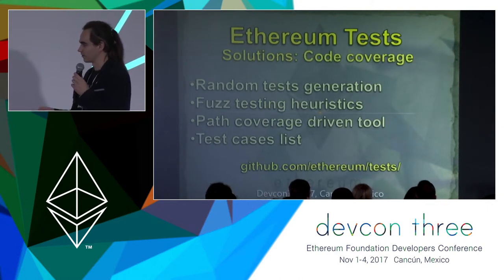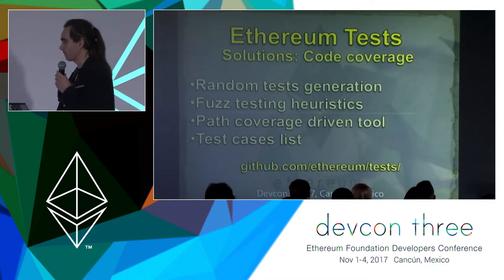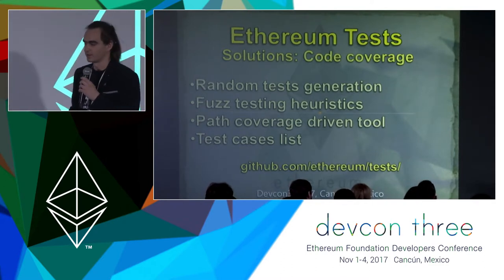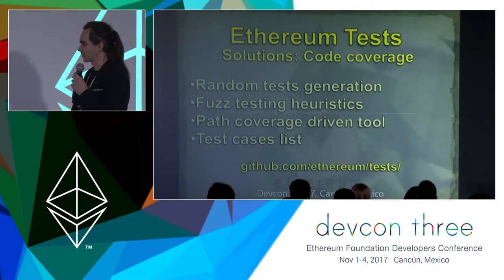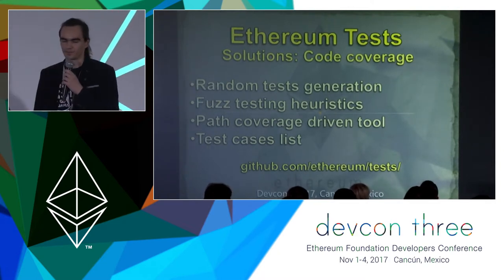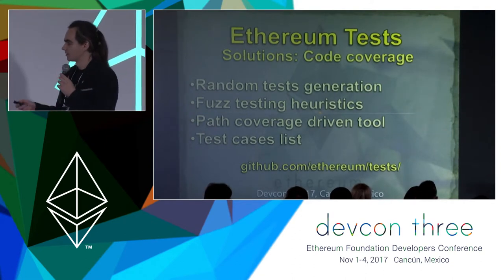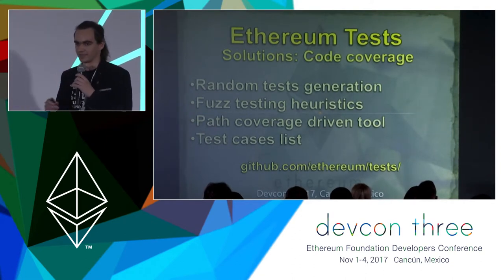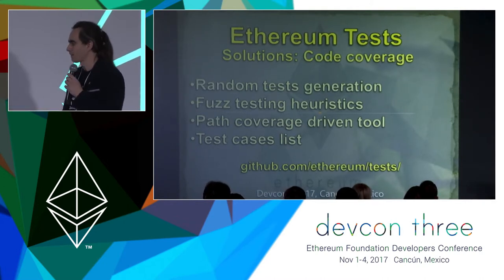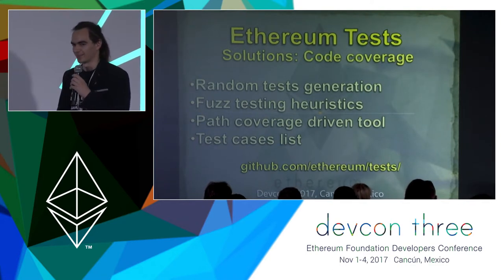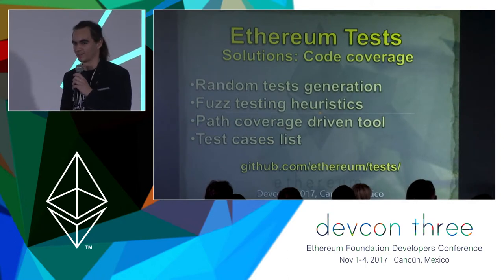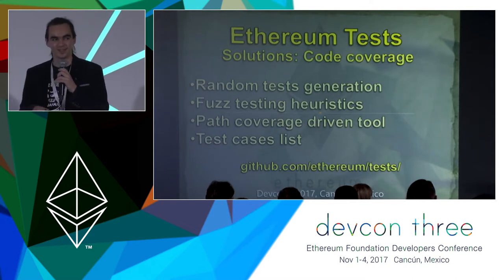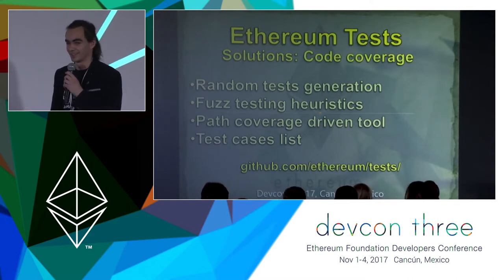So how did we solve those issues? To get the best code coverage, first we have a test cases list which can be found on Google Documents. These are manual test cases — if you come up with an idea for a test case you can manually add it there. Also, I want to mention that if you think you know how to cause a consensus issue, there is a bug bounty reward from the foundation — if you discover a consensus issue you could get money.